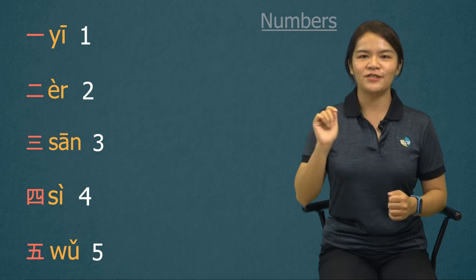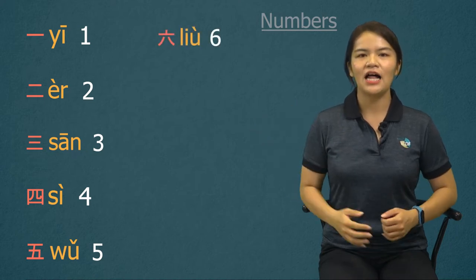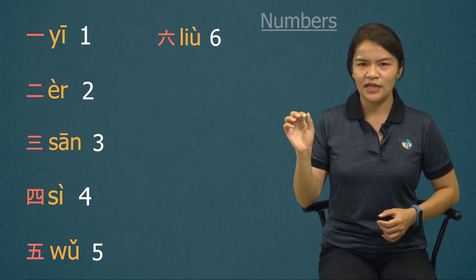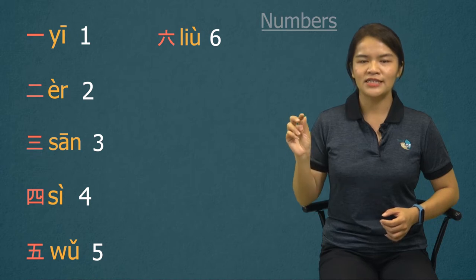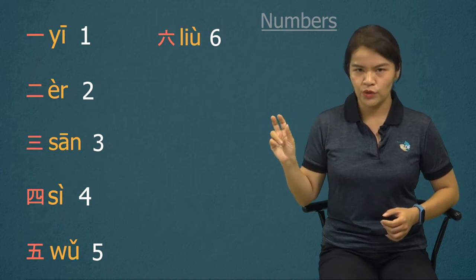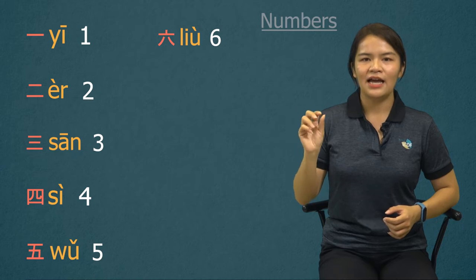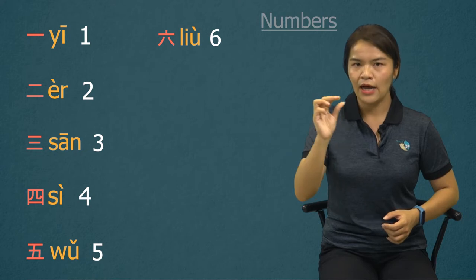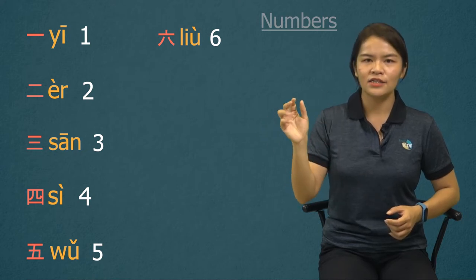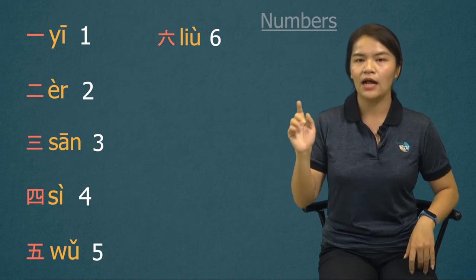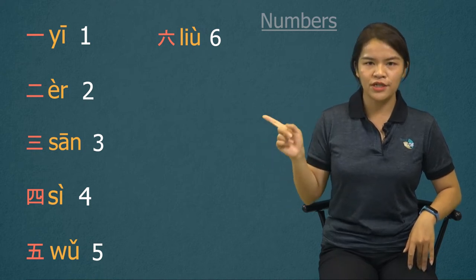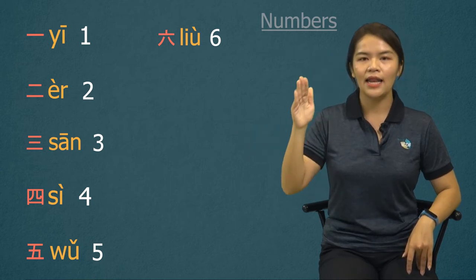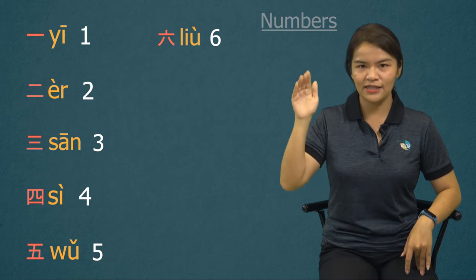We continue from number six to zero. Number six: 六, 六. Please take a look at pinyin — the vowel 'iu' doesn't pronounce like 'yu', it's pronounced like 'yu' and 'uu' together. With the consonant 'l', it's liu, liu. It's falling tone.